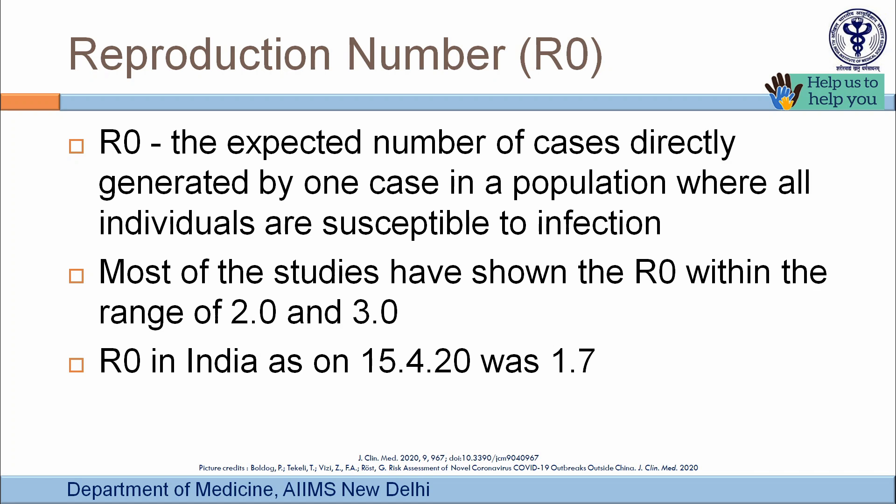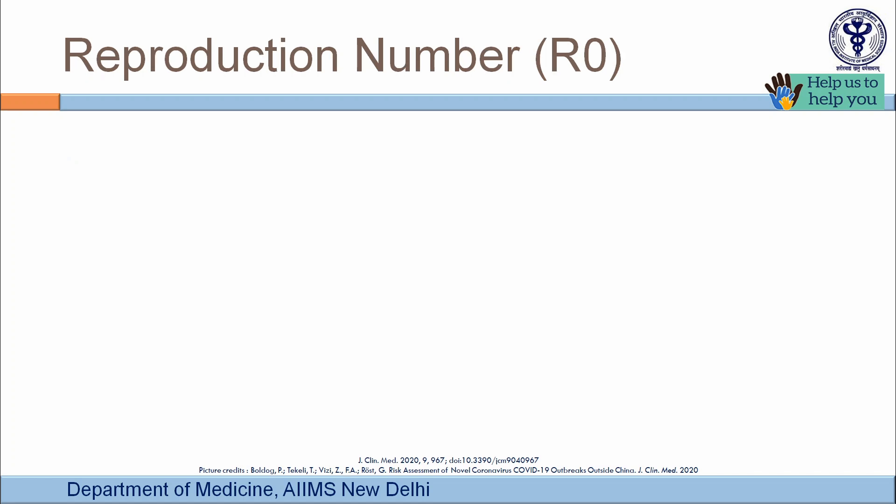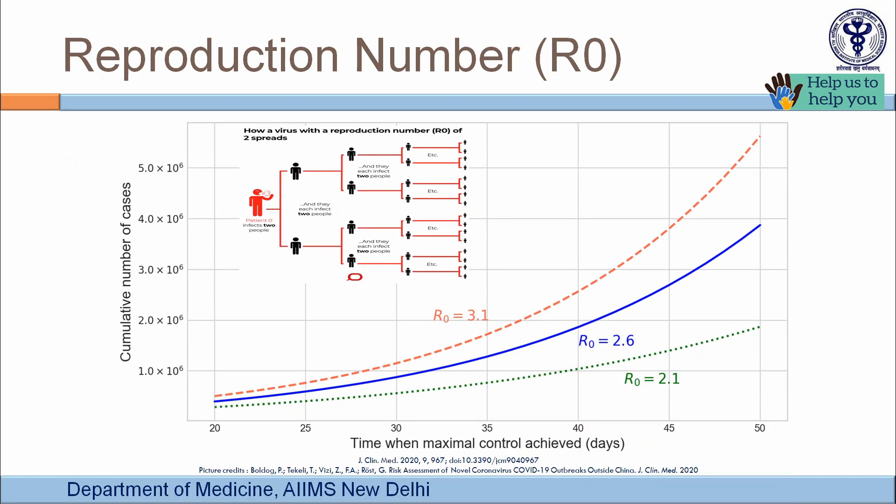Many factors affect the reproduction number, including population density, number of household contacts, and patient mobility. As of mid-April, the reproduction number in India was 1.7. The clinical implication is illustrated by a graph: with an R0 of 2, each person infecting two others leads to a logarithmic increase in case numbers.